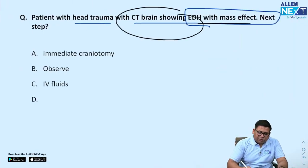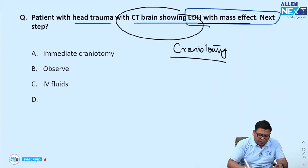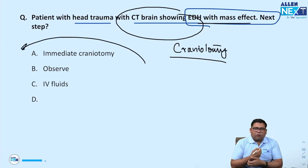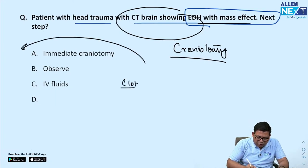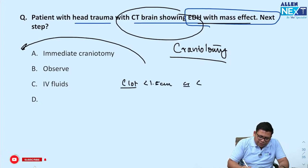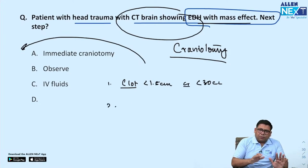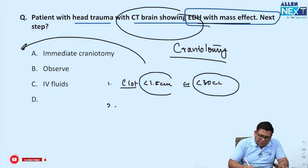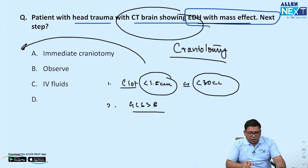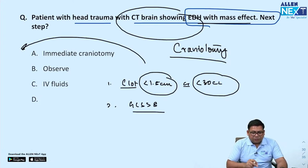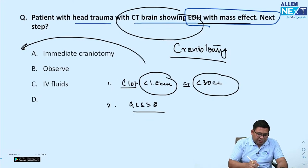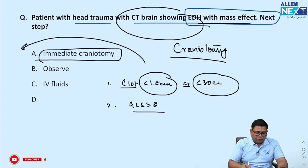CT brain showing EDH with mass effect — the next step is craniotomy. Indications for conservative management are: clot less than 1.5 cm or less than 30 cc in volume, and GCS more than 8. Here the patient has mass effect, so the answer is craniotomy, not observation.